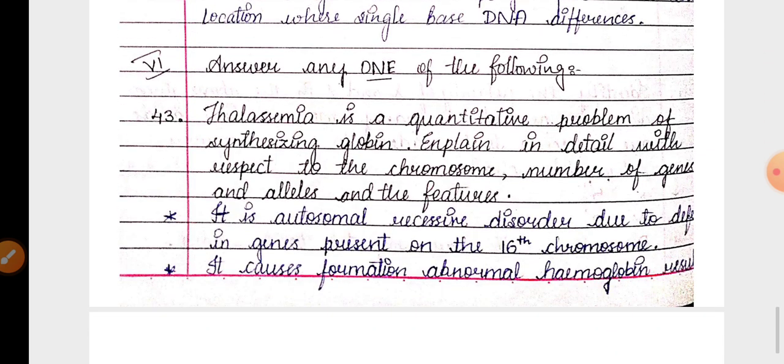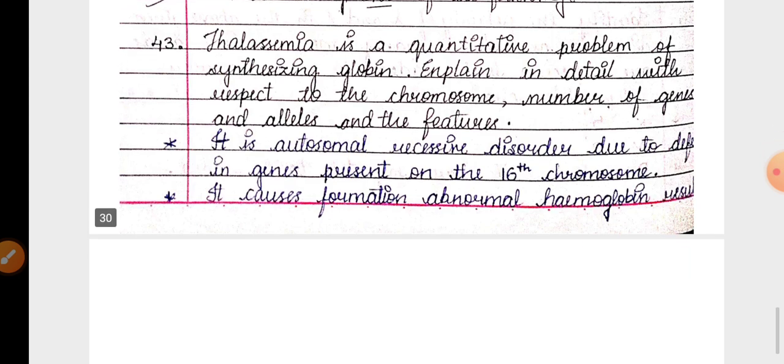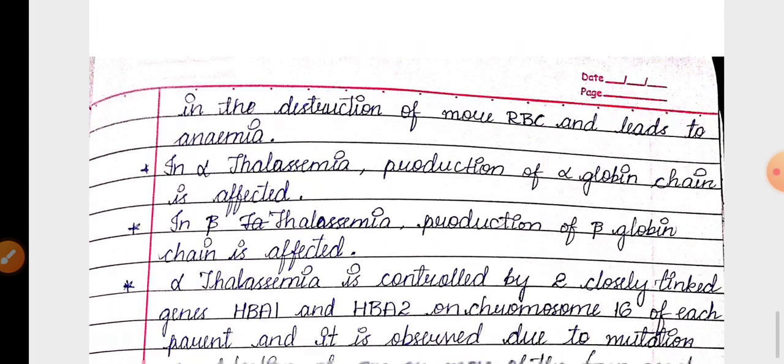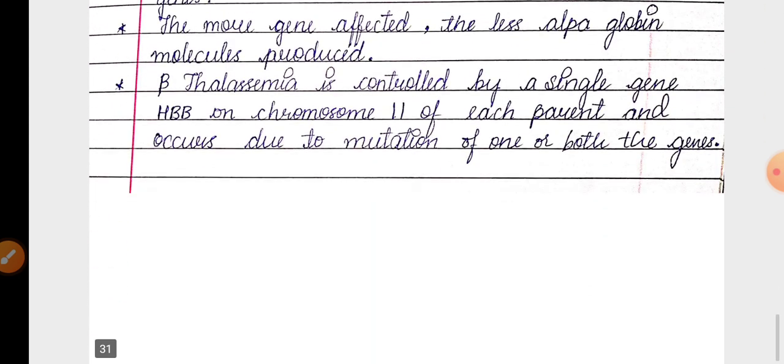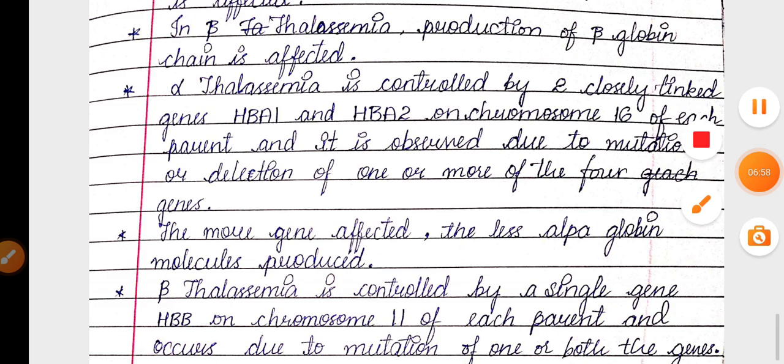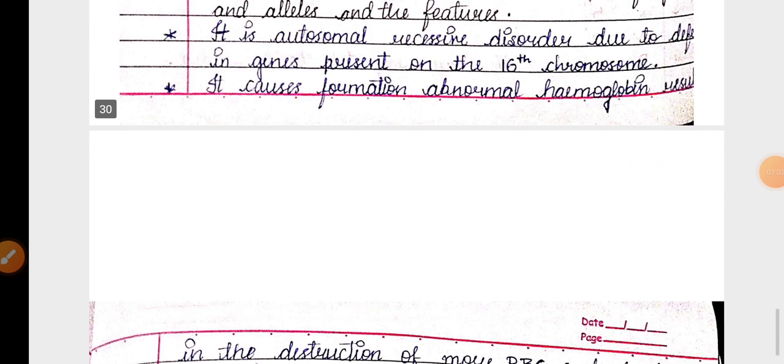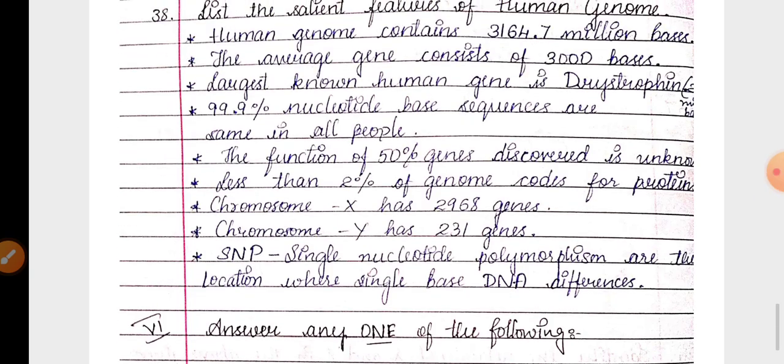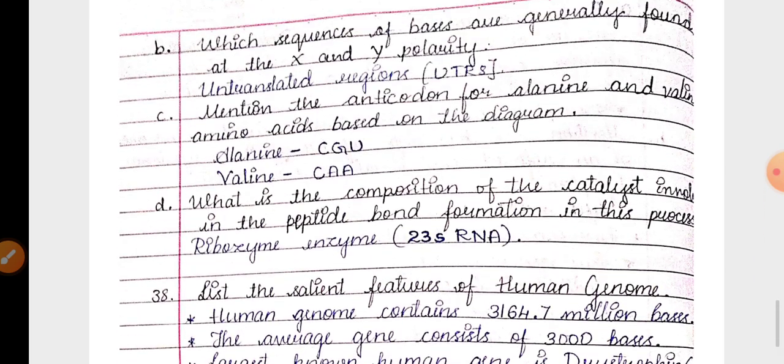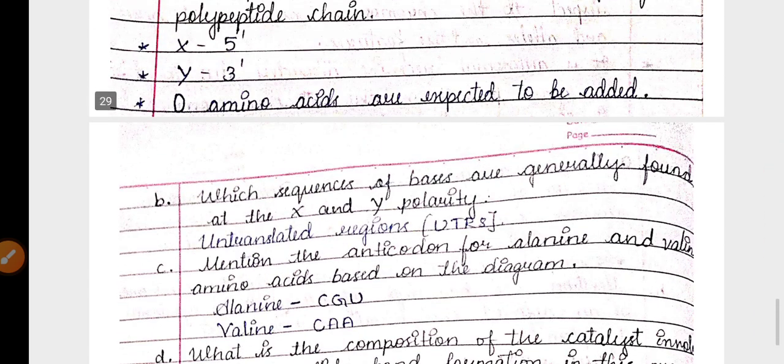Then 43 question again about, like model paper one, thalassemia explanation has been asked. That has been given. So these are the answers for the three model papers released by PU board. Remaining chapter solutions shortly I am going to upload. Thank you.